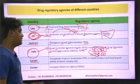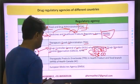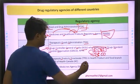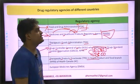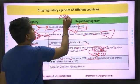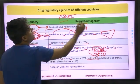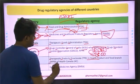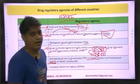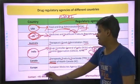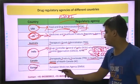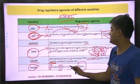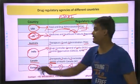Canada basically requires approval from the Therapeutic Products Directorate for healthcare products. In India, FSSAI approval is needed for nutraceutical products and food products. The Food Branch of Health Canada is another part for full production approvals. Lastly, there is EMEA — European Medicines Agency.